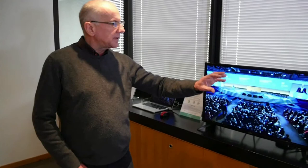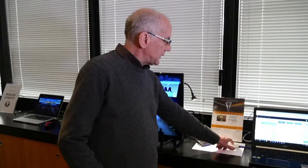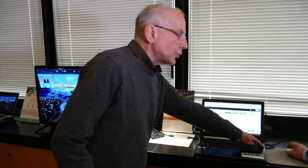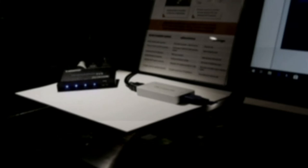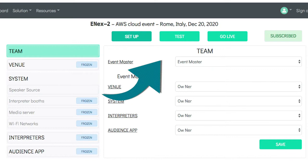Once the event is configured, we need to input the speaker source signal into the event manager computer. We are taking the audio-video signal from the mixer in the control room through an HDMI cable, and through a converter, we are taking the signal and inputting it via USB into the event manager dashboard. During the configuration process, the event manager can test and re-check the system as many times as needed to ensure the configuration is working properly, by going into test mode.